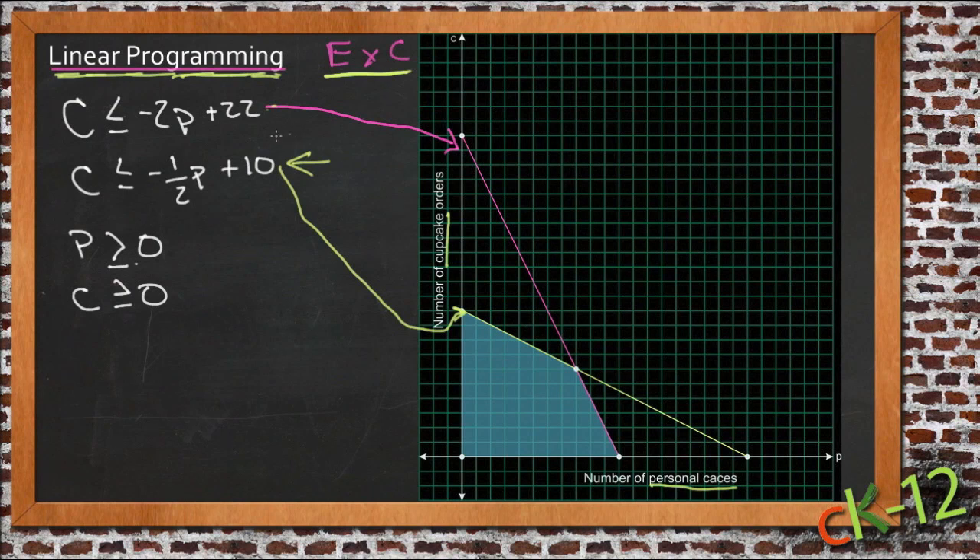And with those limitations and different requirements for cupcakes and personal cakes, he needs to try and find what the best possible combination is for profitability. So what we do is we graph both of these descriptions on one graph. So we have our first description here that describes the time he has.